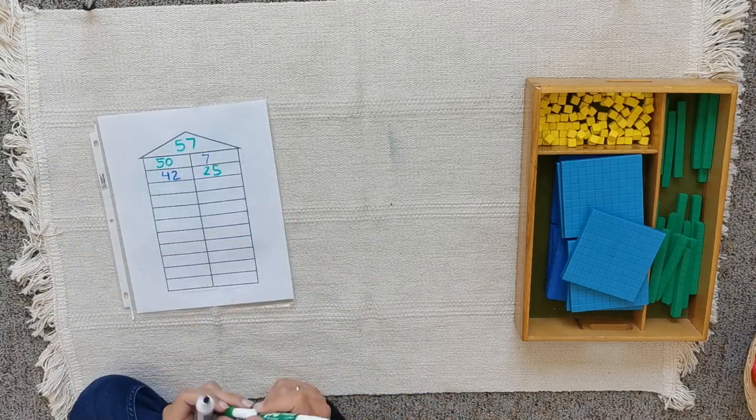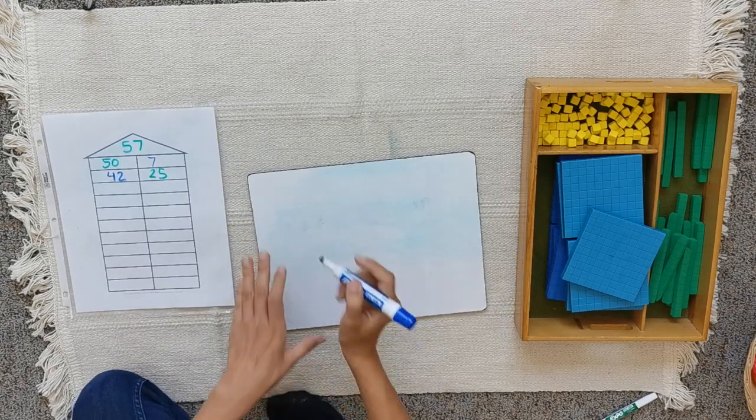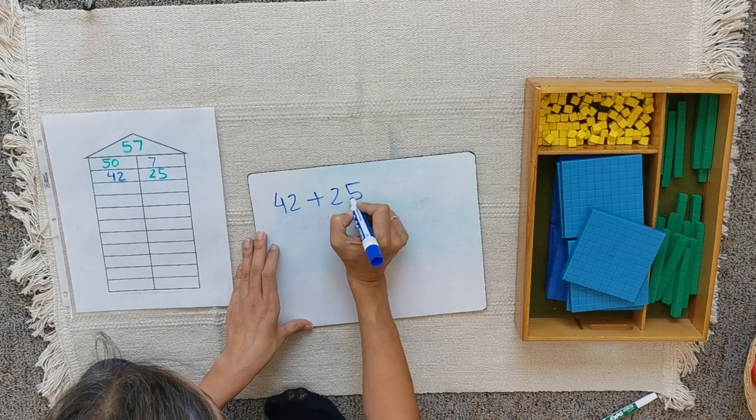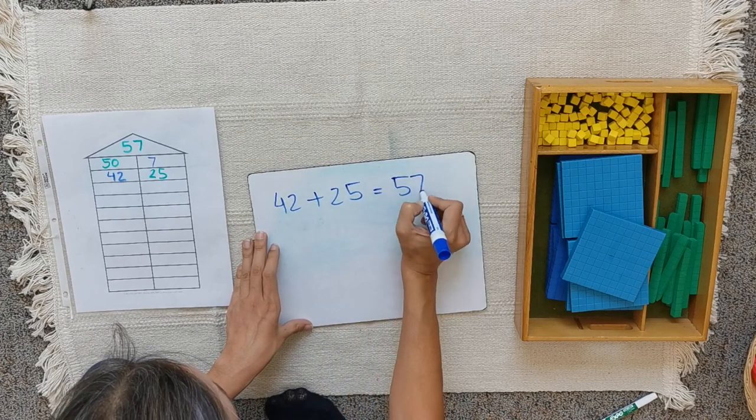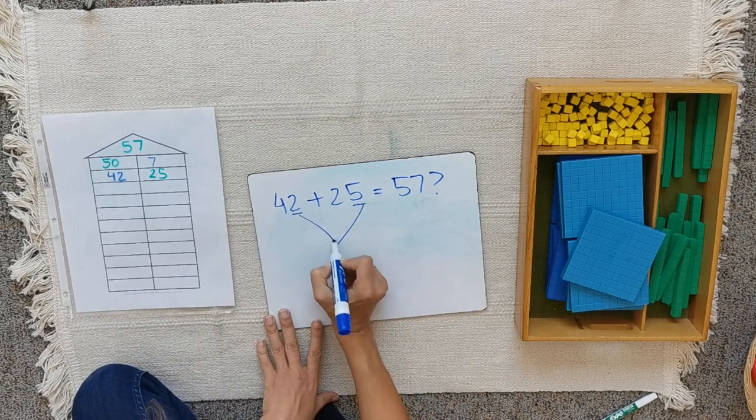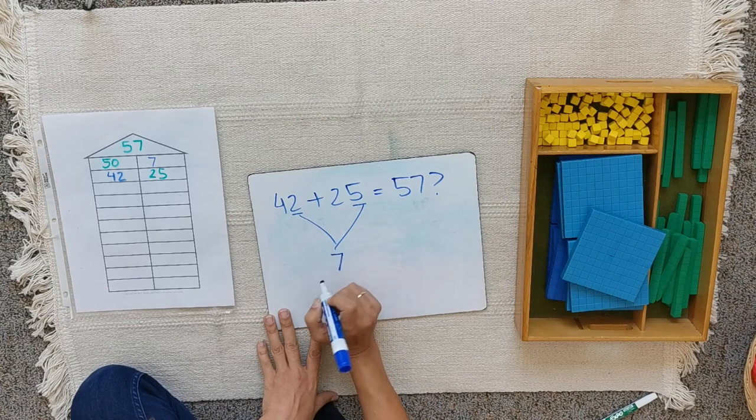If you're not sure, turn your paper or use a whiteboard and check it. Is 42 plus 25 equal to 57? Yes or no? Ones together: 2 and 5. Two and 5 makes 7. It sounds good.